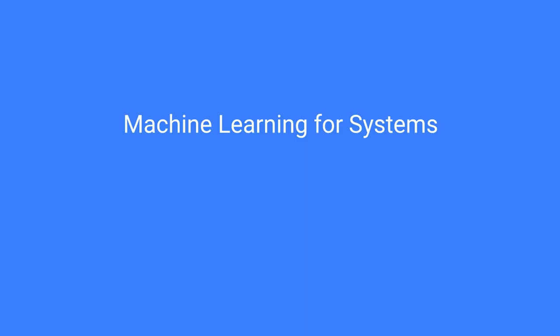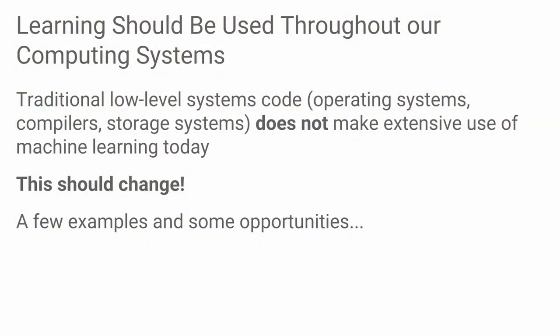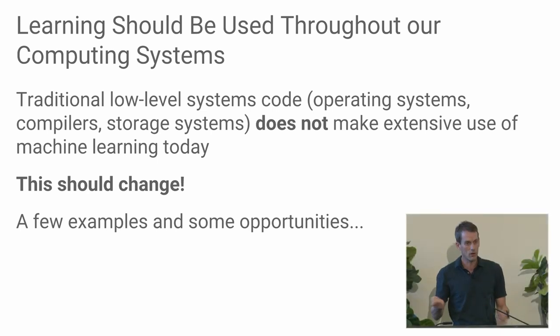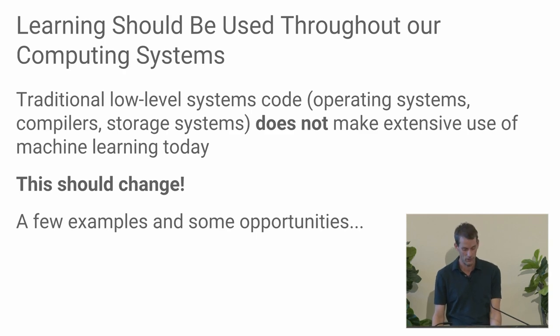Let me switch gears and talk about where machine learning can really impact computer systems. The state of things today is that we don't really use much machine learning in most computer systems. Most low-level systems code—things like operating systems, compilers, storage systems—really don't make much use of machine learning. But I think this should really change, and I'll give a few examples of why I think there are great opportunities here.